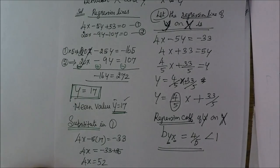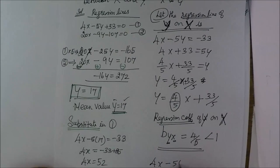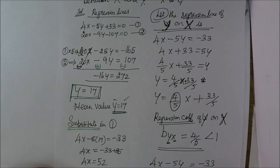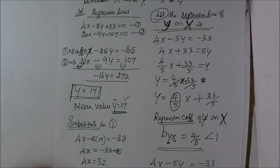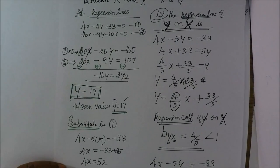Suppose this equation is 4x minus 5y equal to minus 33. So 5y equals 4x minus 33. Therefore, x is equal to 5 by 4 y minus 33. So bxy is equal to 5 by 4.